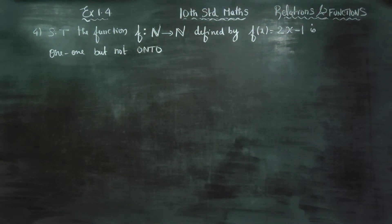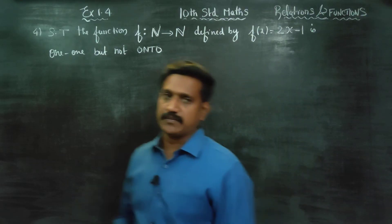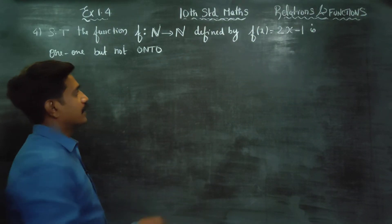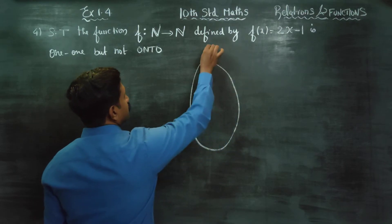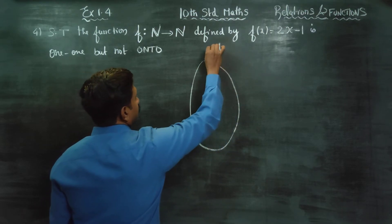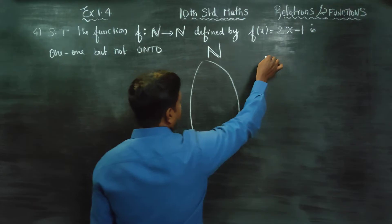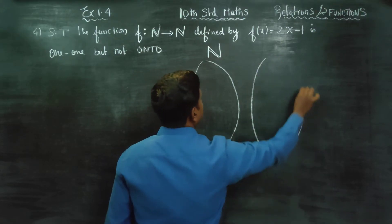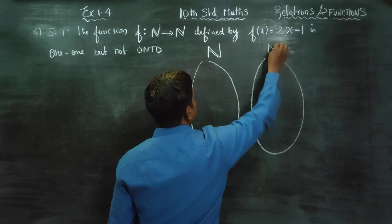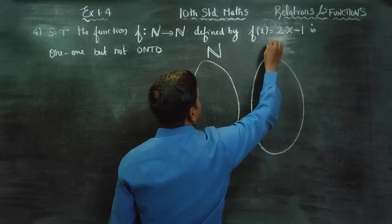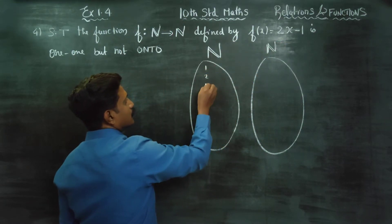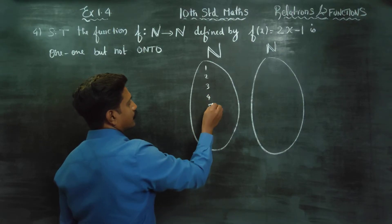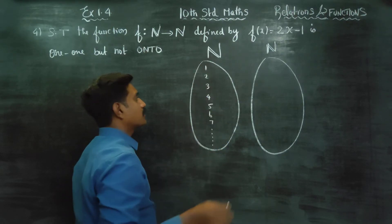Dear 10th standard students, a function is given from natural numbers to natural numbers. The domain is natural numbers 1, 2, 3, 4, 5, 6, 7... and the codomain is also natural numbers 1, 2, 3, 4, 5, 6, 7, 8...